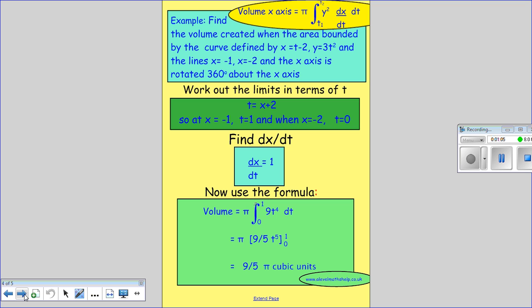So here's an example: find the volume created when the area bounded by the curve defined by x = t - 2 and y = 3t² and the lines x = -1 and x = -2 and the x-axis is rotated 360 degrees about the x-axis.